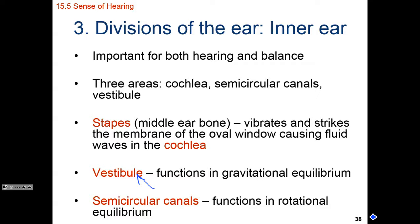Rotational equilibrium: individuals with a good sense of direction and who never get lost generally have excellent dynamic equilibrium from their semicircular canals. You can throw off both rotational and static equilibrium by spinning in a circle quickly, causing sensory receptors in the semicircular canals and vestibule to send contradictory information to your brain — contradicting what your eyes are sending — resulting in dizziness or nausea.